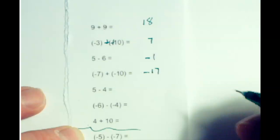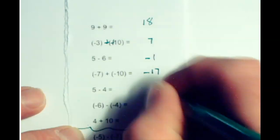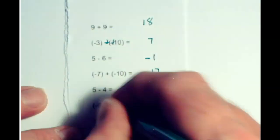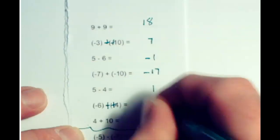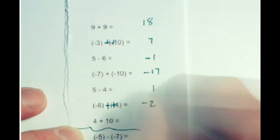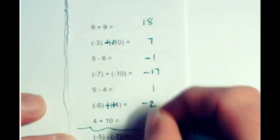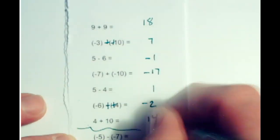These are different signs — the difference is 1 and it's positive. These are a double shot, so now you have different signs — the difference is 2 and it's negative. These are the same signs — add them up, you've got 14.